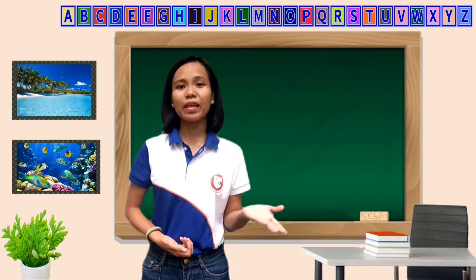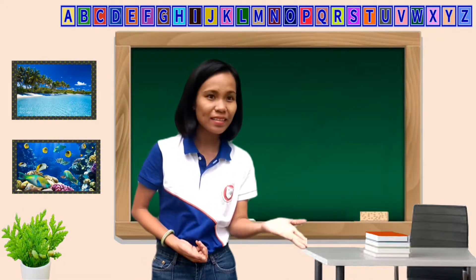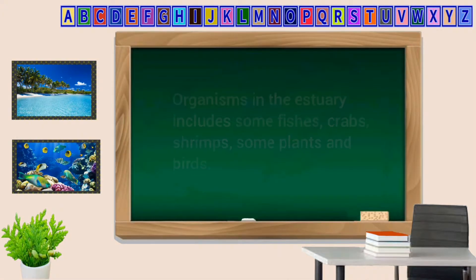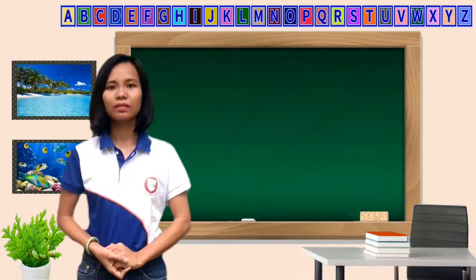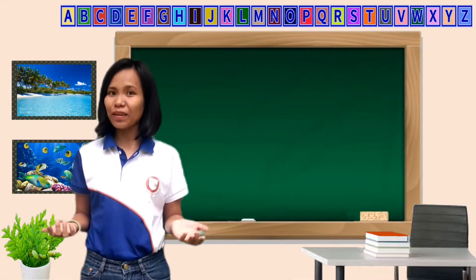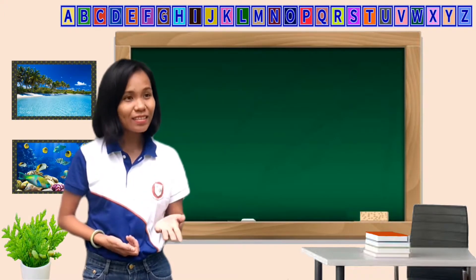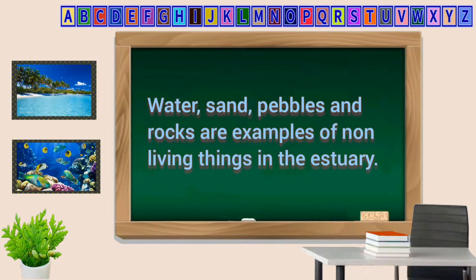Can you give some examples of organisms living in the estuary? Organisms in the estuary include some fishes, crabs, shrimps, some plants, and birds. What about non-living things that we can find in the estuary? Water, sand, pebbles, and rocks are examples of non-living things in the estuary.